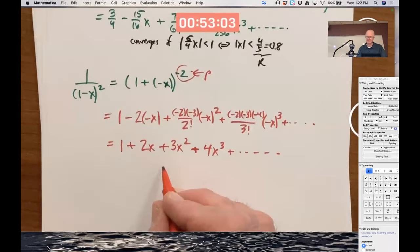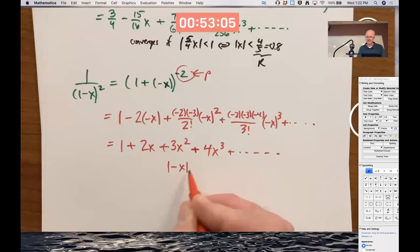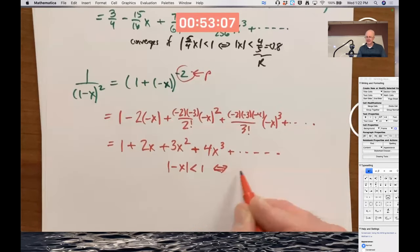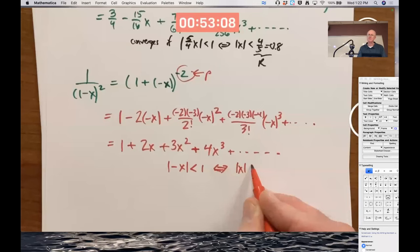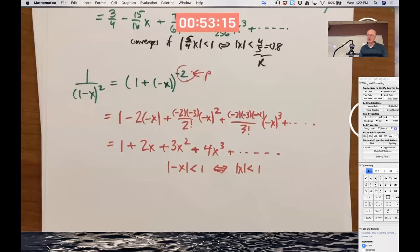And it converges if the absolute value of x is less than negative 1, which is the same as saying the absolute value of x itself is less than 1. Is this right? Let's try confirming the answer in two other ways.